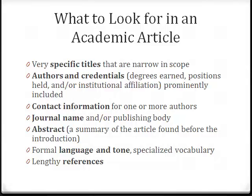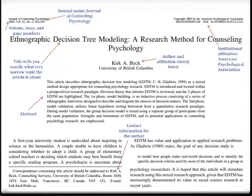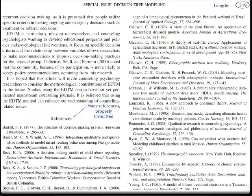There are several defining characteristics of academic articles. Academic articles will generally have very specific titles that are narrow in scope. The authors and their credentials will be prominently included, as well as their contact information. Look for the journal name or publishing body and the volume and issue information in the header or the footer. Academic articles will begin with an abstract, use formal language, and have a lengthy references section.